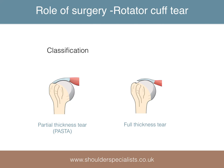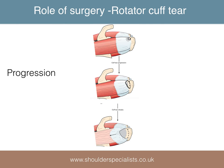Considering rotator cuff tears, the difference between a partial thickness and a full thickness tear is demonstrated here. There are numerous classifications of full thickness tears, but these are beyond the scope of this talk. One of the roles of surgery, as alluded to previously, may be to try and prevent progression as well as treating the current symptoms.